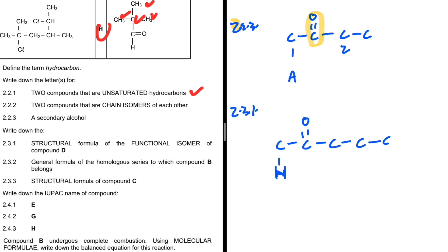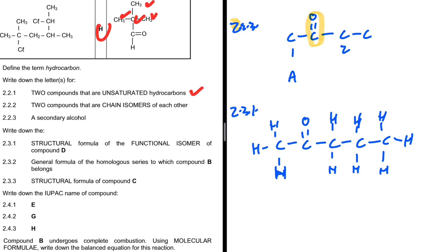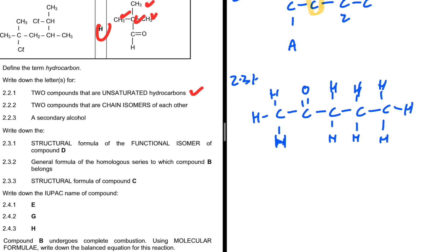Now we fill out the hydrogens on our ketone structural formula. Checking that each carbon has four bonds — one-two-three-four — that is correct. That is the structural formula of the functional isomer of compound D for question 2.3.1.